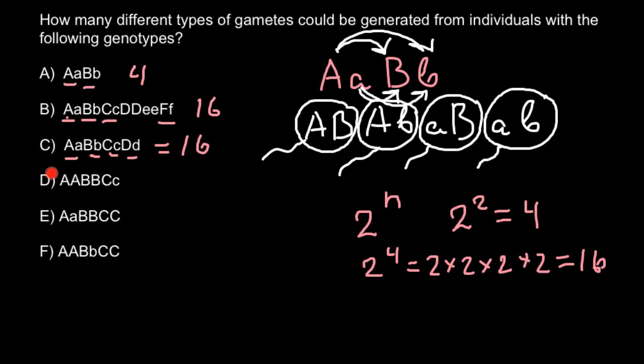So here D, we have 3 sets of alleles, 3 genes, but 2 of them are homozygous dominant and only one is heterozygous. So according to our formula we have 2 raised 1 that equals 2. So here the answer would be 2. So only 2 variants of the gametes we have here.